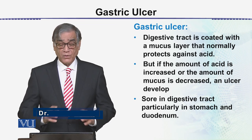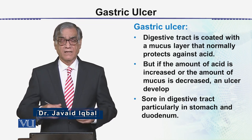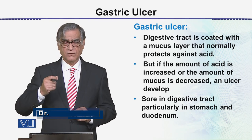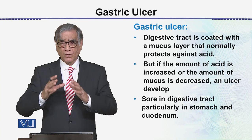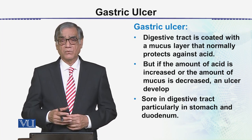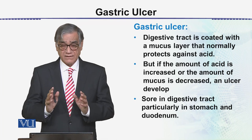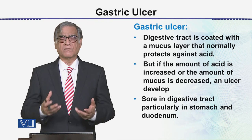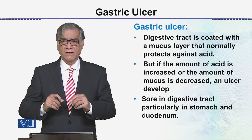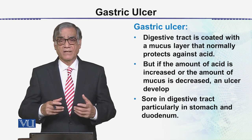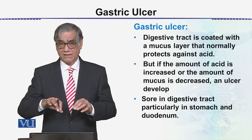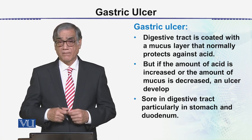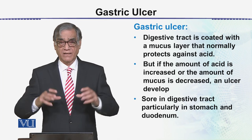The digestive tract is coated. As we have studied earlier, the whole digestive tract, right from the esophagus or the mouth to the anus, is all coated with mucus. This mucus protects the underlying muscles and underlying layers of the GI tract. Sometimes what happens is the mucus breaks, and then the digestive enzymes start digesting the walls of the stomach or the duodenum, and in that way it becomes a sore.